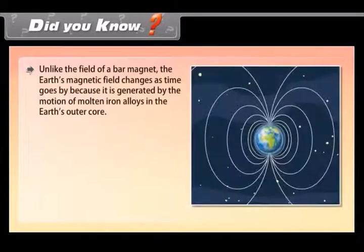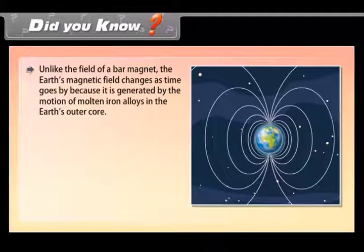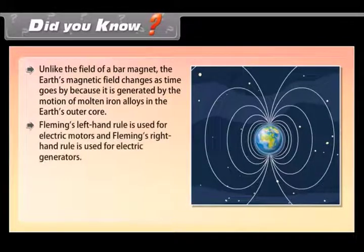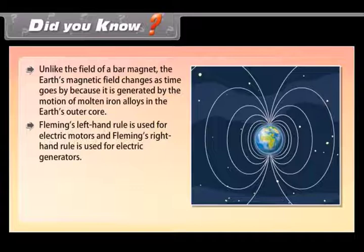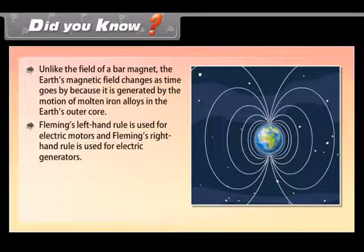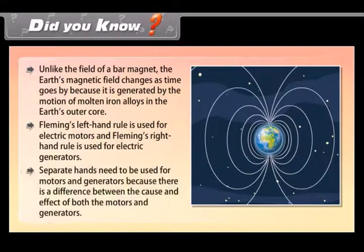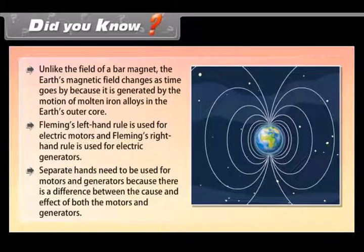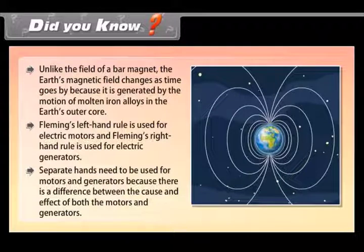Did you know? Unlike the field of a bar magnet, the earth's magnetic field changes as time goes by because it is generated by the motion of molten iron alloys in the earth's outer core. Fleming's left-hand rule is used for electric motors and Fleming's right-hand rule is used for electric generators. Separate hands need to be used for motors and generators because there is a difference between the cause and effect of both the motors and generators.